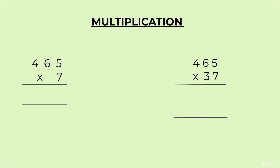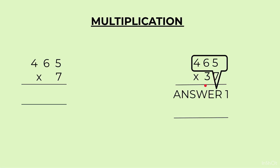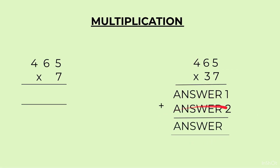Instead of a single digit, if we have two or more digits — suppose we have 37 instead of 7 — we have to multiply the three-digit number with a two-digit number. We will first multiply the ones place digit with the three-digit number and get an answer. After that, the digit at the tens place — here we have 3, which is actually 3 tens — so we have to multiply 3 tens with 465, which means 465 × 30. We write a zero and multiply 465 by 3. Then we add the two answers to get the final answer.